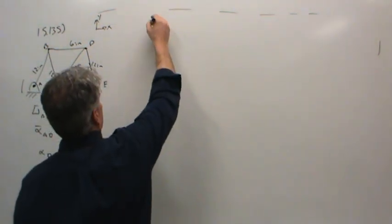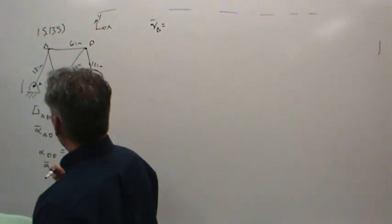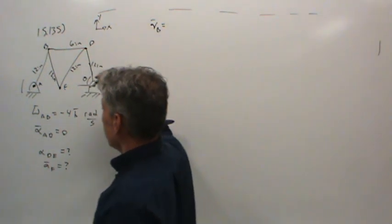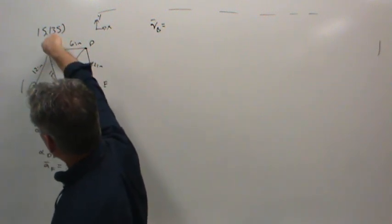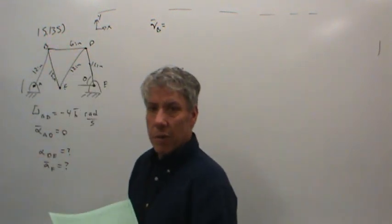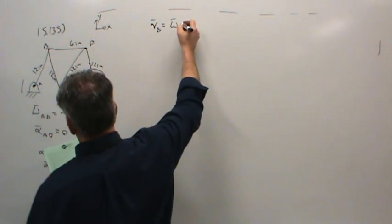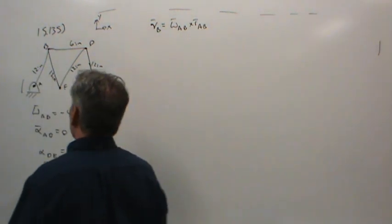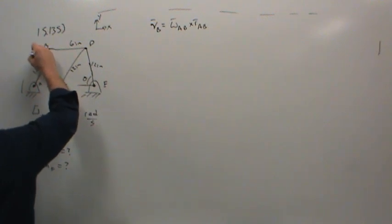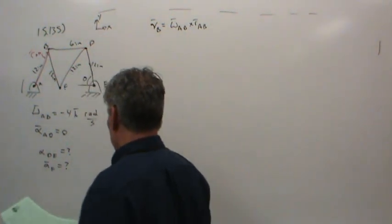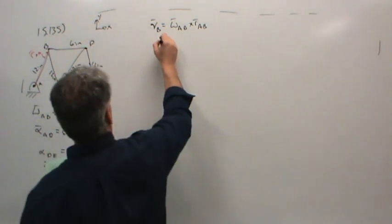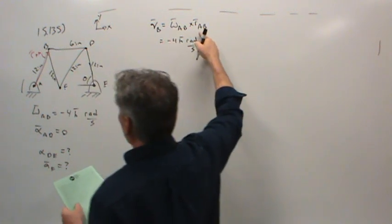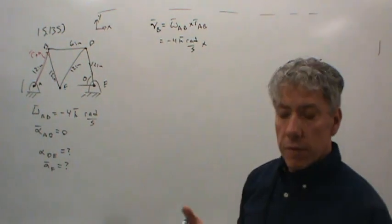Let's start with velocity analysis and write the velocity of point B. We can write it in terms of what's going on with AB, because this point is moving on a circle. You can intuitively understand it: AB is rotating this way, so the velocity of point B has to be perpendicular to R_AB, down to the right. Another way to write that is the angular velocity of AB crossed with the vector from A to B.